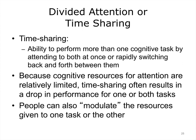Time sharing refers to the ability to perform more than one cognitive task by attending to both at once or rapidly switching back and forth between them. We routinely divide our attention when working on a computer — we may be writing, listening to music, and watching for an important email or text message. However, given that cognitive resources for attention are relatively limited, time sharing often results in a drop in performance for one or both tasks. We can modulate our attention resources by giving more attention to the task that is more important at the moment.